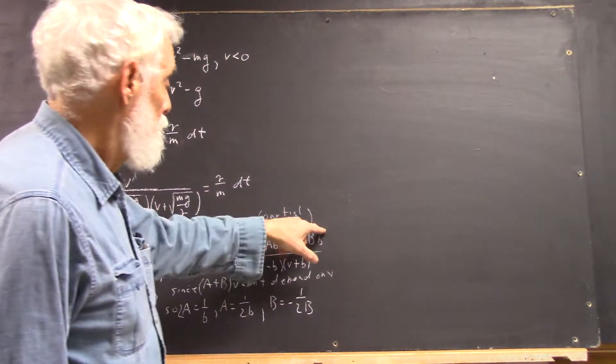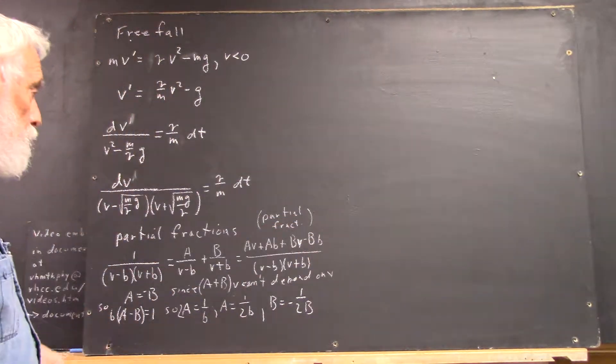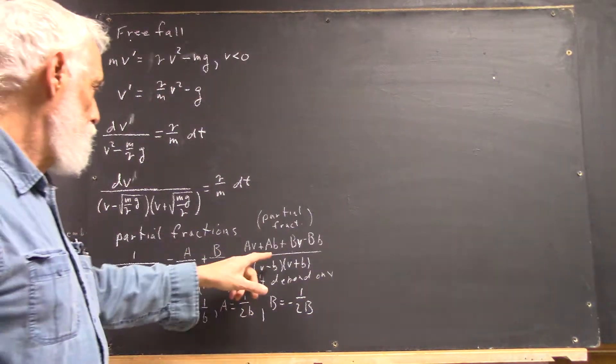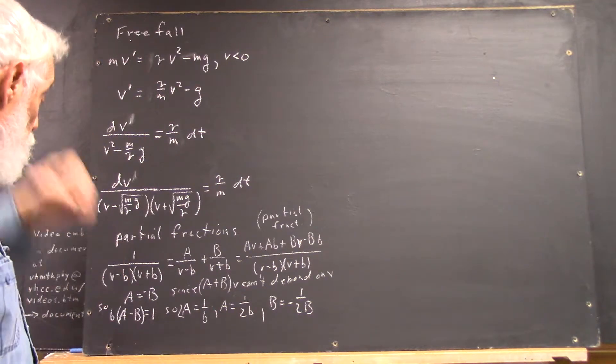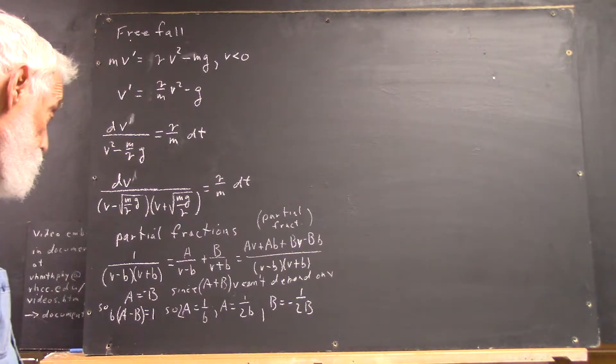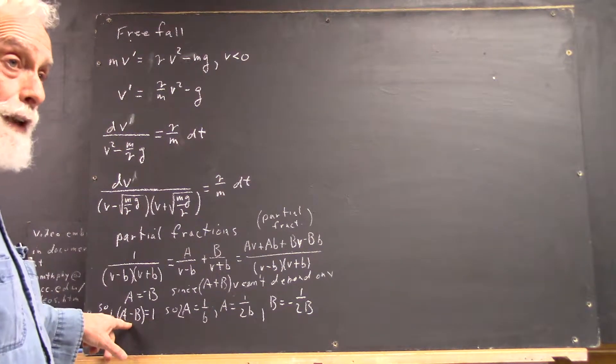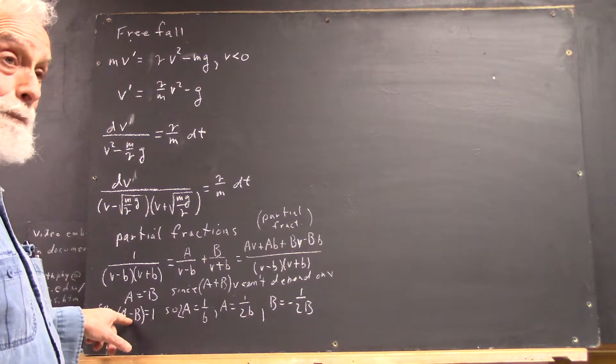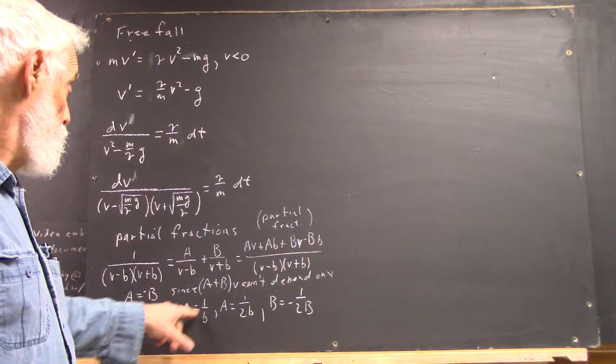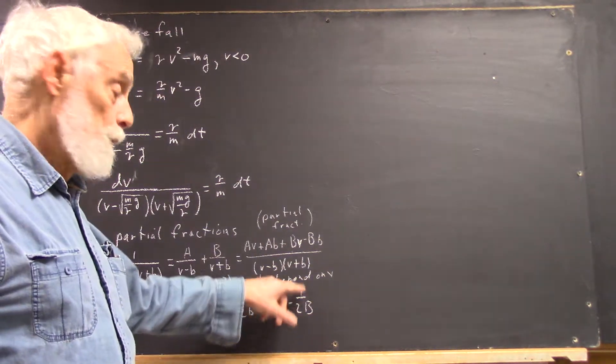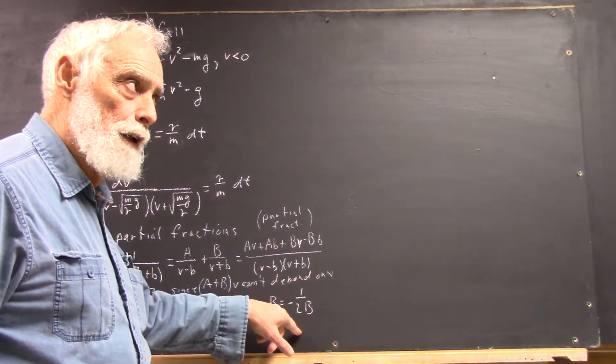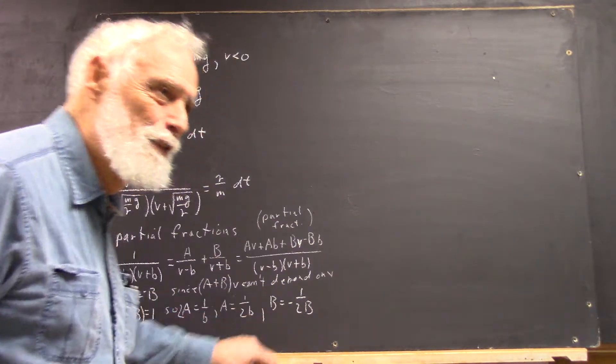Well, you set this equal to 1, and you conclude that we factor the little b out. We get B times A minus B equals 1, and knowing that A and B are opposite, well, A minus B is then 2A. So, 2A has to be 1 over B. A is 1 over 2B, and B is negative 1 over 2B.